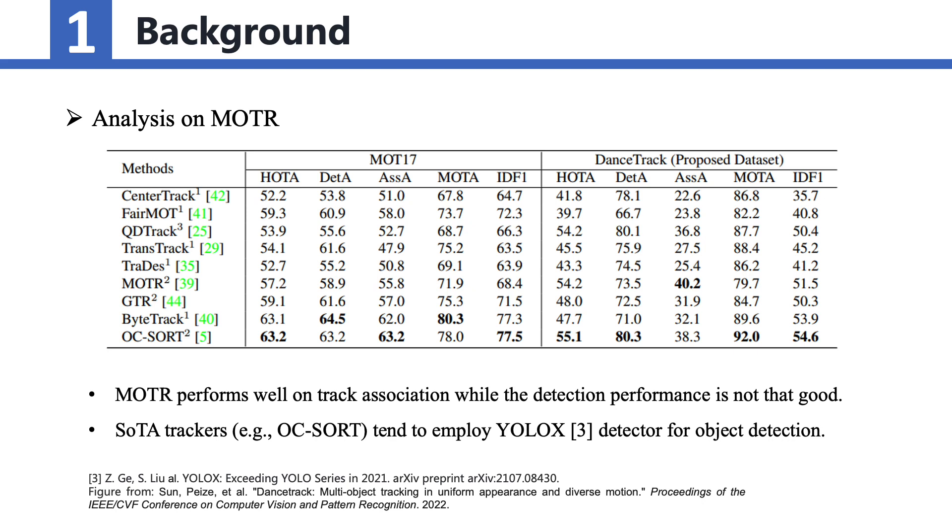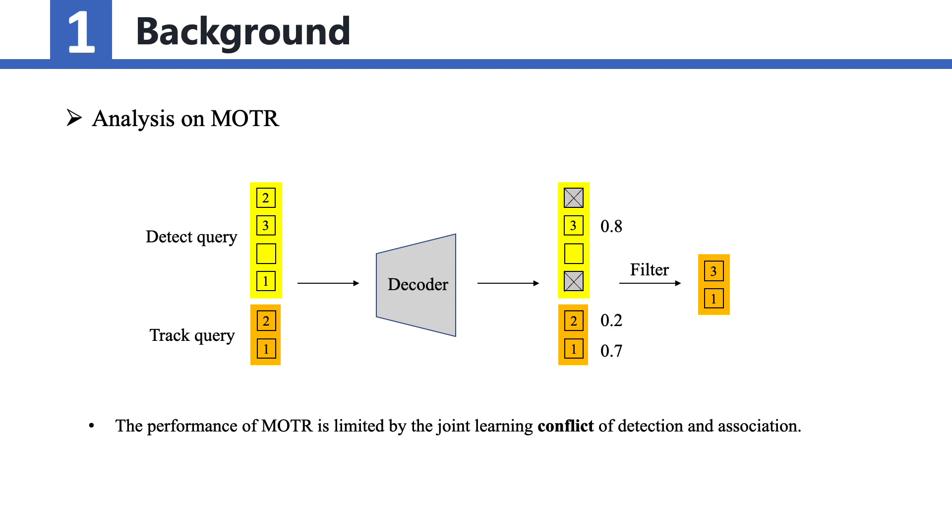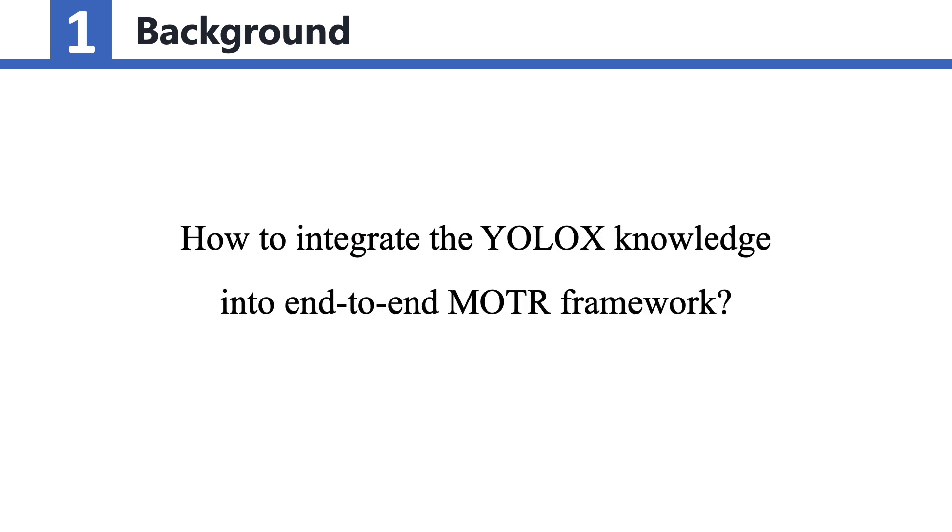Many state-of-the-art trackers, such as OC Sort, employ YOLO-X as the object detector to compensate for this limitation and achieve better detection accuracy. The main challenge with MOTR lies in the joint learning conflict between detection and association tasks. The detection performance can be compromised when trying to optimize both tasks simultaneously.